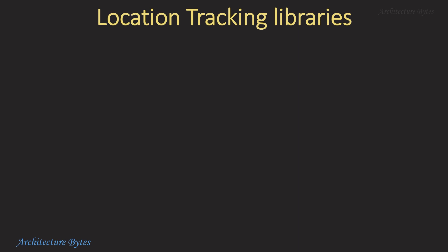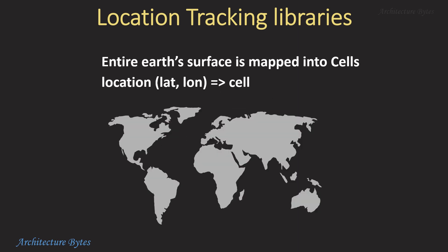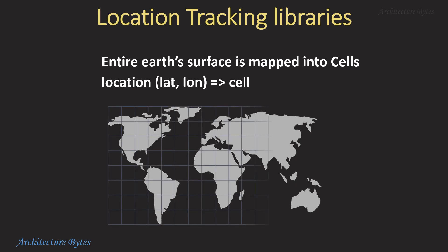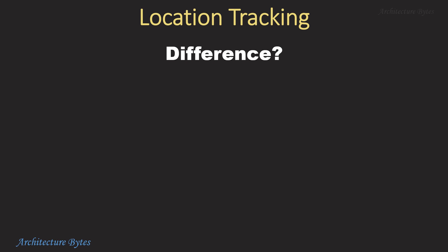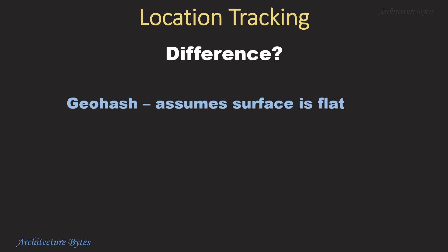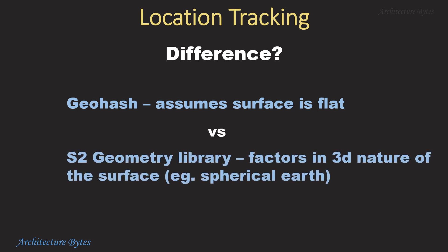We could use a library like Geohash or S2 geometry for this purpose. These libraries divide the entire Earth's surface into cells, and every cell is given a unique ID. Cell size can be predetermined by us. Given a latitude and longitude, the Geohash library can map it as belonging to a particular cell. The primary difference between Geohash and S2 is that Geohash treats the surface it is mapping as flat, while S2 can factor in the 3D nature of the surface — for example, the spherical Earth.